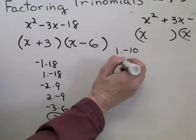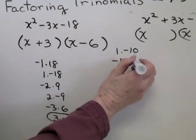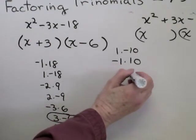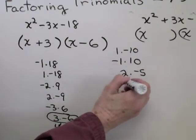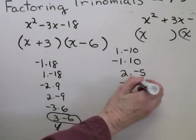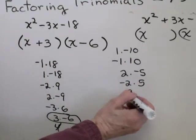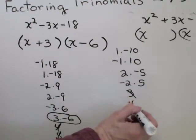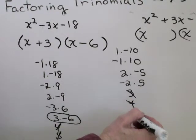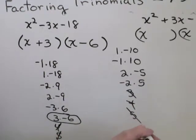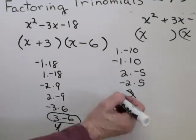1 times minus 10, minus 1 times 10, 2 times minus 5, minus 2 times 5. Does 3 go into 10? Nope. How about 4? Nope. How about 5? Yep, 5 times 2. Oh, I have 5. Once you start getting repeats, you can stop.